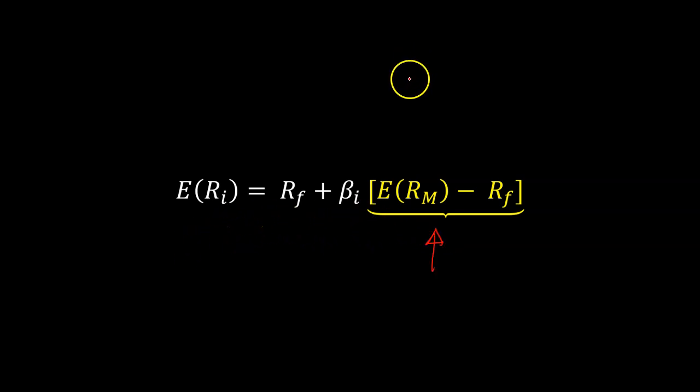Now it turns out that there are two ways in which you can estimate the expected market risk premium. There is something called the historical approach, which is the subject of this video, and then there is another approach called the dividend discount model approach, and that is something that I will talk about in a separate video.